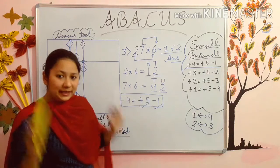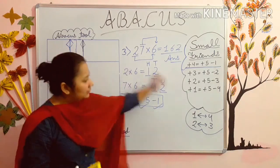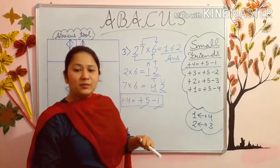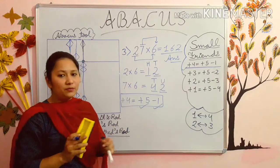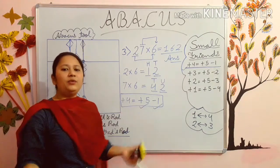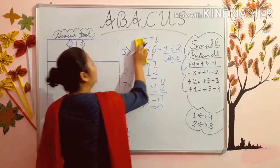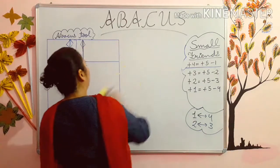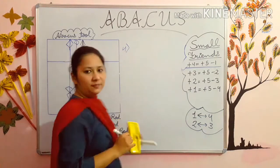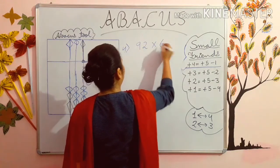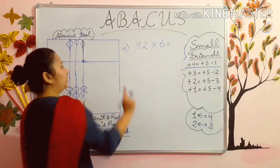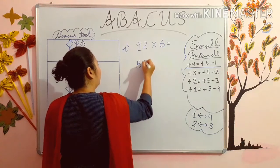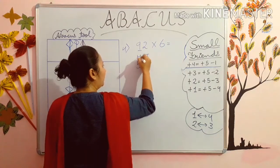Students, the calculation will take time when you will not learn the small friends formula. If you have learnt it, firstly when you get lack of beads — means you have to add 4 but the bead is not there — you can apply the formula plus 5 minus 1 and your 4 is added. Now we will go to our last sum and that sum we will do orally. Our last sum is 92 into 6.